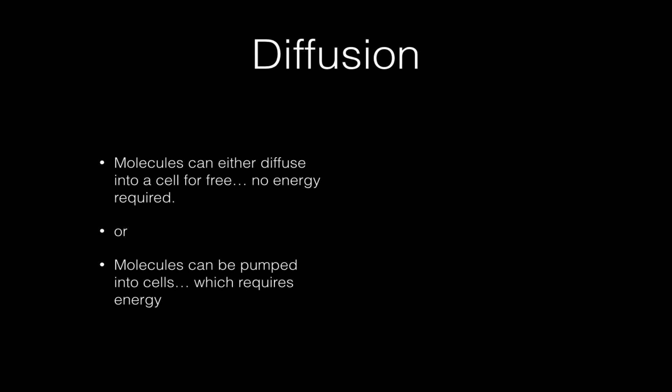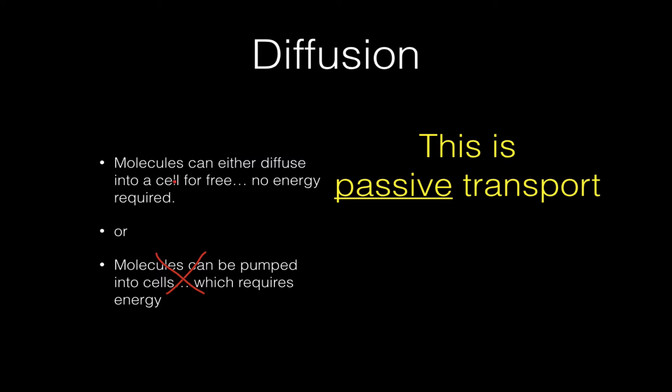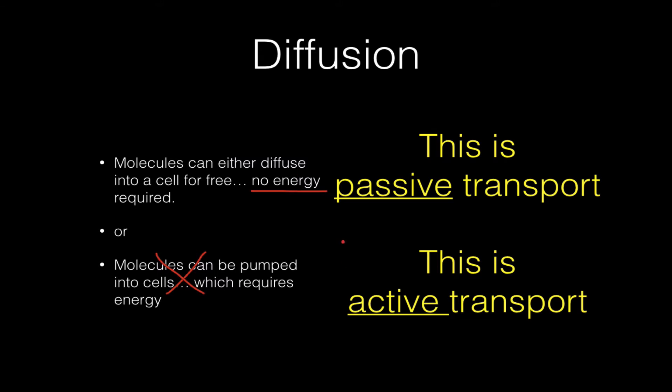Molecules can either diffuse into a cell for free, which means they require no energy, or they can be pumped into cells, which requires energy. If the molecules are pumped, that's not diffusion, that's something else. So when molecules are just diffusing into or out of a cell, we call that passive transport — it requires no energy. If molecules have to be pumped, we call that active transport because it does require energy. This is very important.